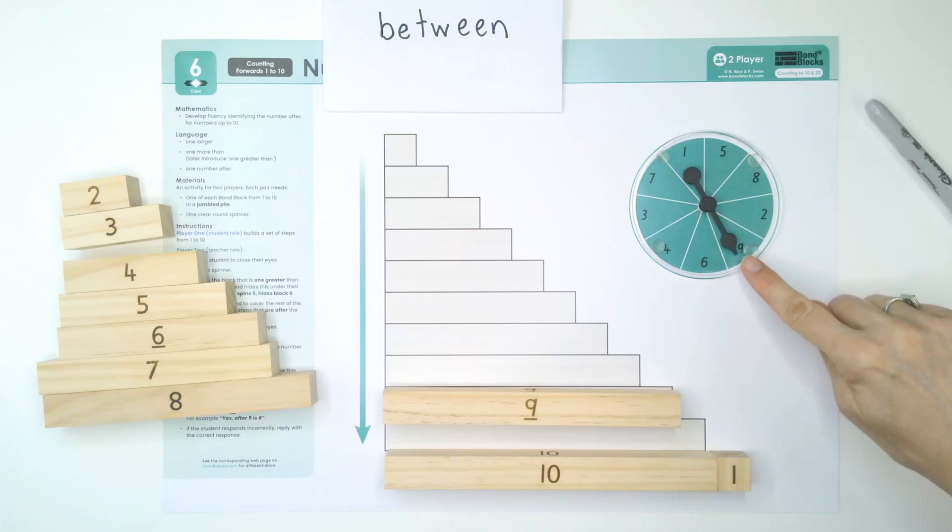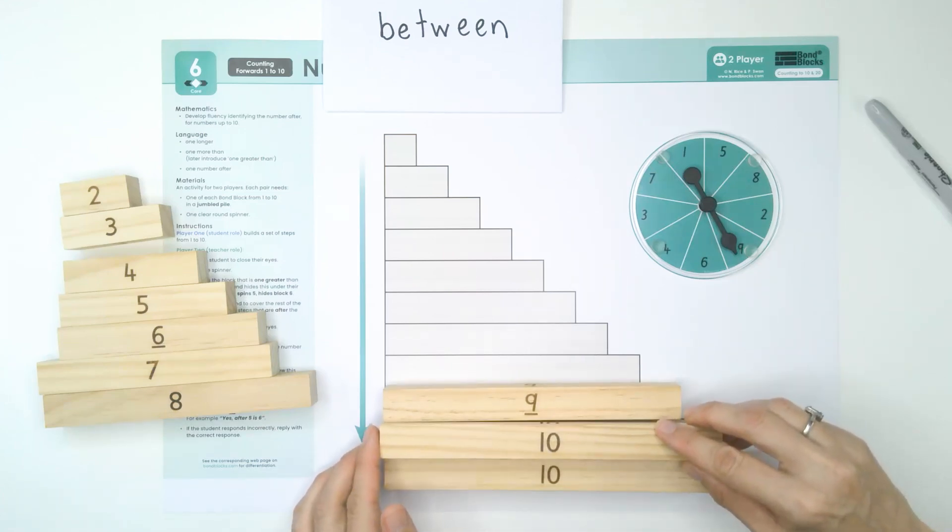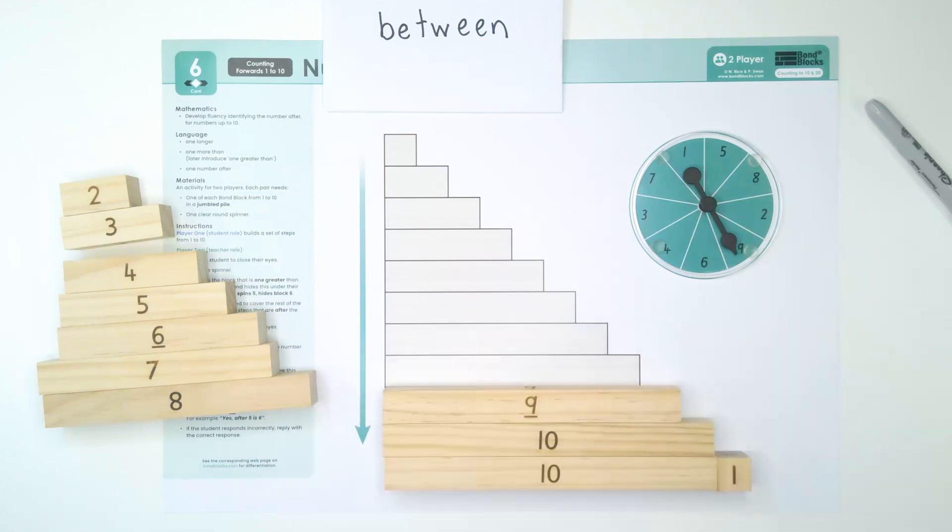And if you spun nine, you would say between nine and eleven is ten. And then we'll put an extra ten block back. And then the answer would say, yes, between nine and eleven is ten. Now it's your turn.